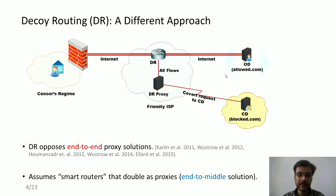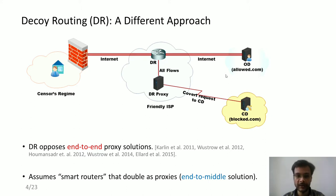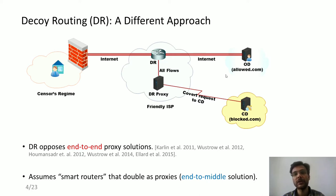There is a client which resides in the censored regime and wants to access a blocked website, which we term as the covert destination or CD. However, there are a few websites the client is allowed to access — the allowed.com in our case — or the overt destination, OD. A client initiates a normal request to the overt destination so there is no suspicion raised to the adversary. On the path from the client to the overt destination there is a smart router sitting in between, which recognizes with the help of a secret handshake that these packets are actually intended for the covert destination, and it deflects them in real time to the covert destination so the client can access CD content.